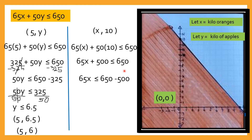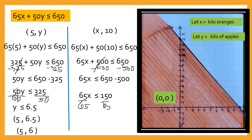And 65x — so what we're going to do is subtract both sides by 500. The other side also is 500, so this becomes 0. So 65x is less than or equal to 150. Now, dividing both sides by 65 para ma-solve natin yung x — so ang pwede mong bilhin, x is less than or equal to 2.3.